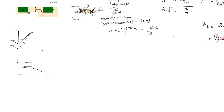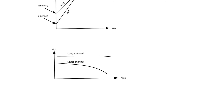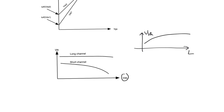To reiterate: drain-induced barrier lowering manifests when channel length becomes very small, causing V_threshold to drop. More precisely, it is an effect of V_DS on threshold voltage. Higher V_DS leads to a lower V_T. In long-channel transistors, we didn't notice it as much because the drain potentials required to have a noticeable impact on threshold voltage were so high that the transistor would probably be destroyed before we observed anything useful. But for short-channel transistors, you definitely see the effect quickly.